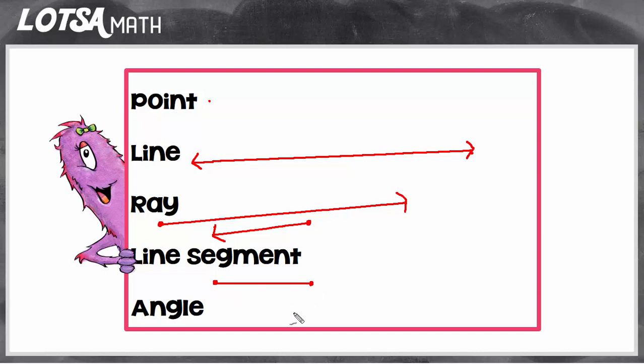The last thing we want to talk about is an angle. An angle is when two different geometric figures come together. You can have two rays or two line segments or one of each. But if you put those together and let them share an endpoint, you've created an angle.